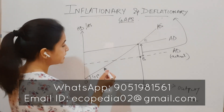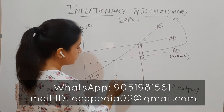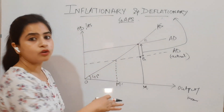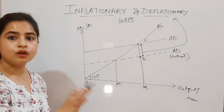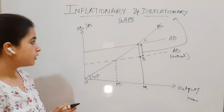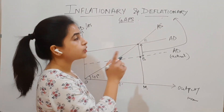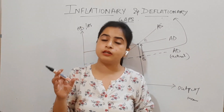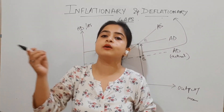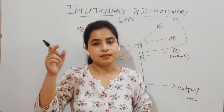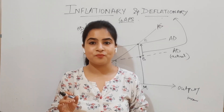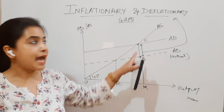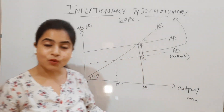As a result of the deflationary gap, the output level of the economy will also fall. To reach a new equilibrium, prices will fall down, because here there is a shortage of demand and supply is more, so prices go down.